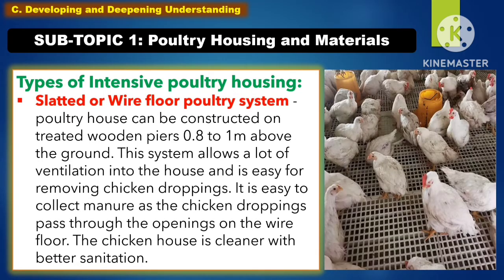Another type of intensive poultry housing is the slotted or wire floor poultry system. Poultry houses can be constructed on treated wooden piers of 0.8 to 1 meter above the ground. This system allows a lot of ventilation into the house and is easy for removing chicken droppings. It is easy to collect manure as the chicken droppings pass through the openings of the wire floor. The chicken house is cleaner with better sanitation.